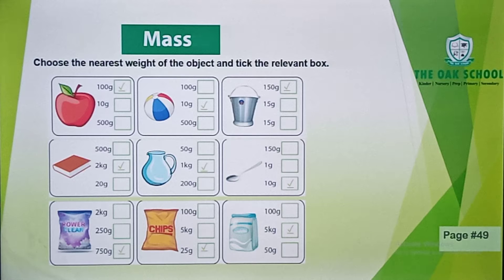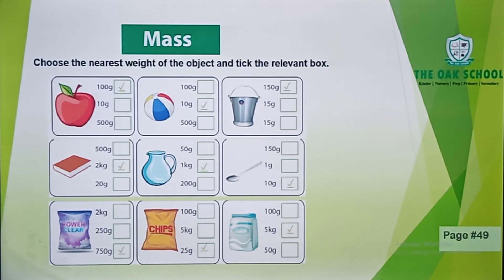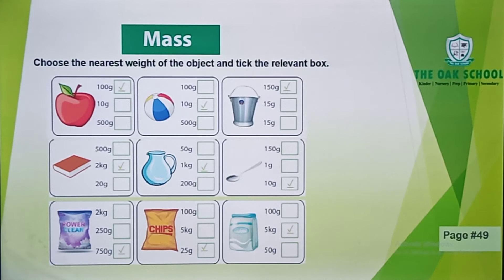Then you have a glass object and its weight is 50 grams, 1 kg, or 200 grams. So you have to tick 1 kg. After that, you have 3 spoons. The spoon's weight is 150 grams, 1 gram, and 10 grams. So the nearest weight is 10 grams.